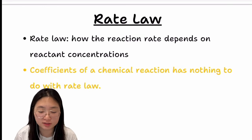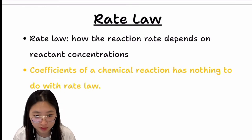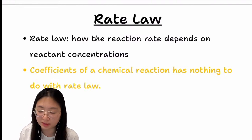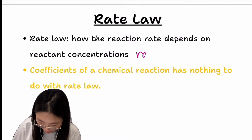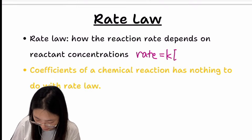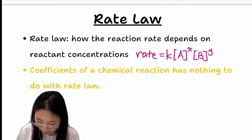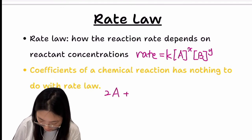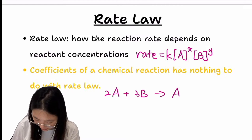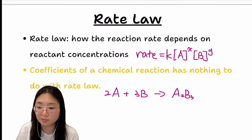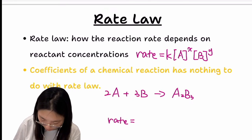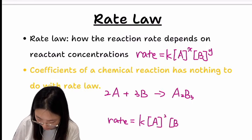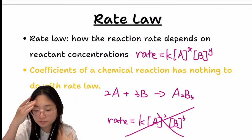When it comes to rate law, we only study the relationship between the reaction rate and reactant concentration. The coefficients of the overall chemical equation have nothing to do with the rate law. Rate = k[A]^x[B]^y. A common mistake is taking the coefficients of reactants directly — for example, writing rate = k[A]^2[B]^3 for 2A + 3B → A2B3. This is completely wrong and one of the most common mistakes.